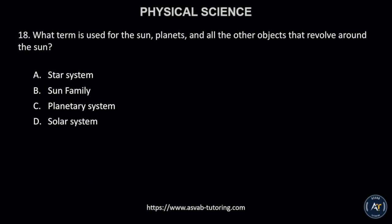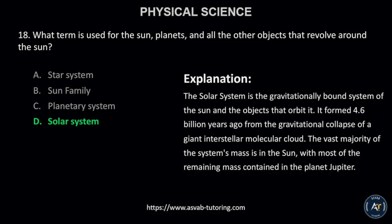Number 18. What term is used for the sun, planets, and all the other objects that revolve around the sun? A. Star system, B. Sun family, C. Planetary system, or D. Solar system. The correct answer is D. Solar system.